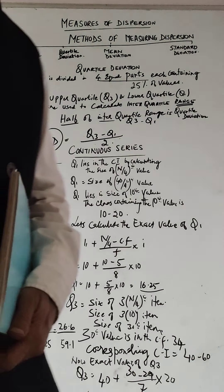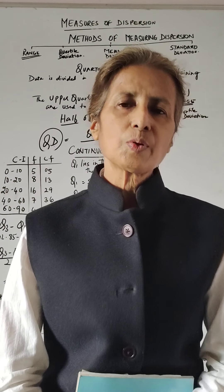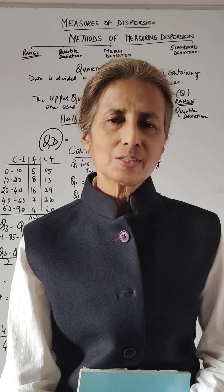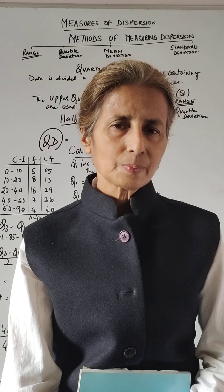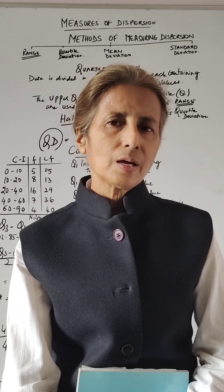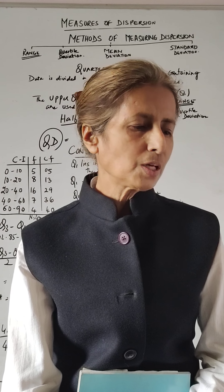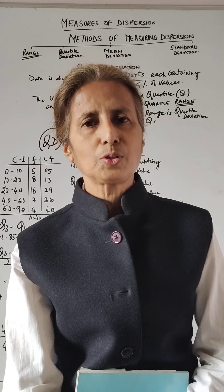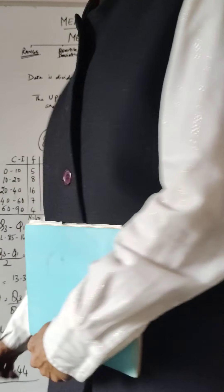Welcome to my class. In continuation with quartile deviations, we finished with quartile deviation in the individual series and discrete series. Now we are doing the continuous series, and then we'll be ready for mean deviation in the next class. This is in continuation with Unit 3, which is scientific tools and interpretation. It takes 27 marks. You need a lot of practice, so let's get going.